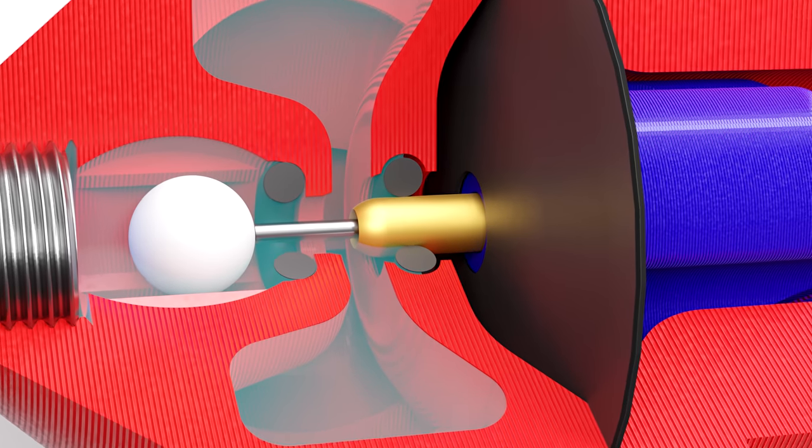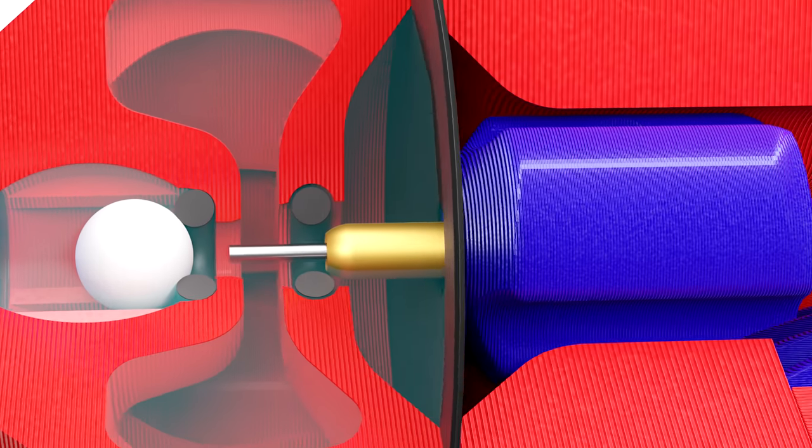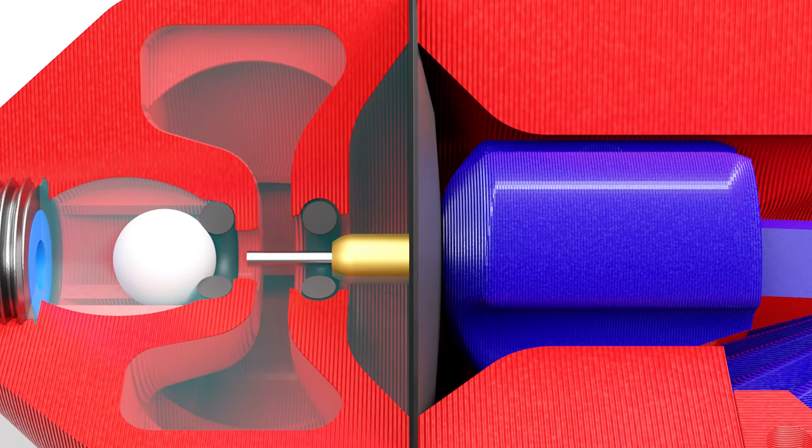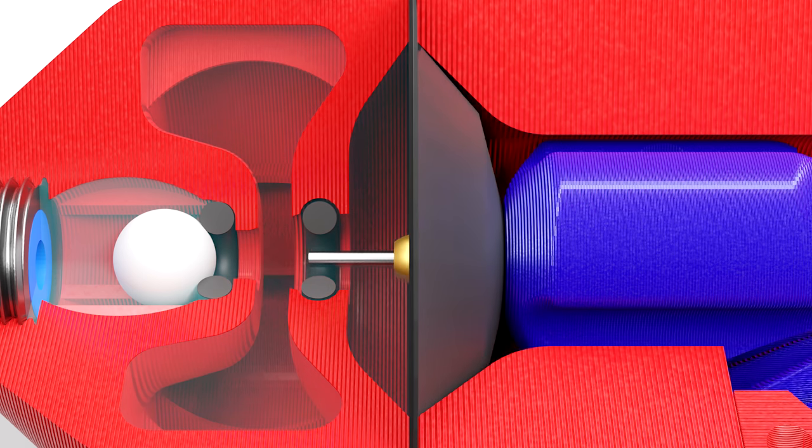Then as the piston travels back towards the gearbox, the ball valve closes and the valve to the diaphragm opens, allowing the stored high pressure air to enter the cylinder. This pushes the diaphragm against the piston, which accelerates it towards the gearbox.